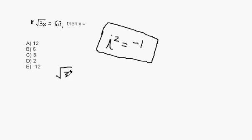Let's write this out. Root 3x equals 6i. What we have to do is get this i into an i squared form. That's the only way we're going to be able to turn it into a real number. As it is right now, it's just the letter i. We don't know what to do with that.